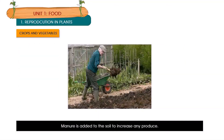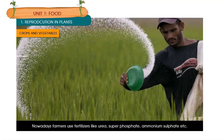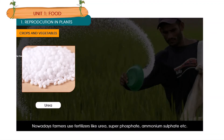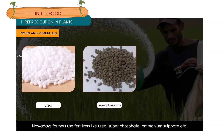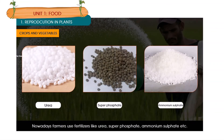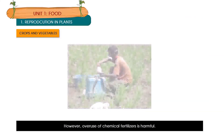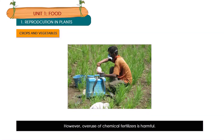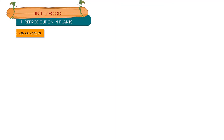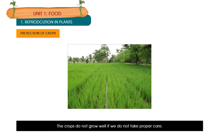Tea and coffee plants grow well on hill slopes because they need plenty of water that does not remain standing near the roots for a long time. Manure is added to the soil to increase produce. Nowadays, farmers use fertilizers like urea, superphosphate, ammonium sulphate, etc. However, overuse of chemical fertilizers is harmful.